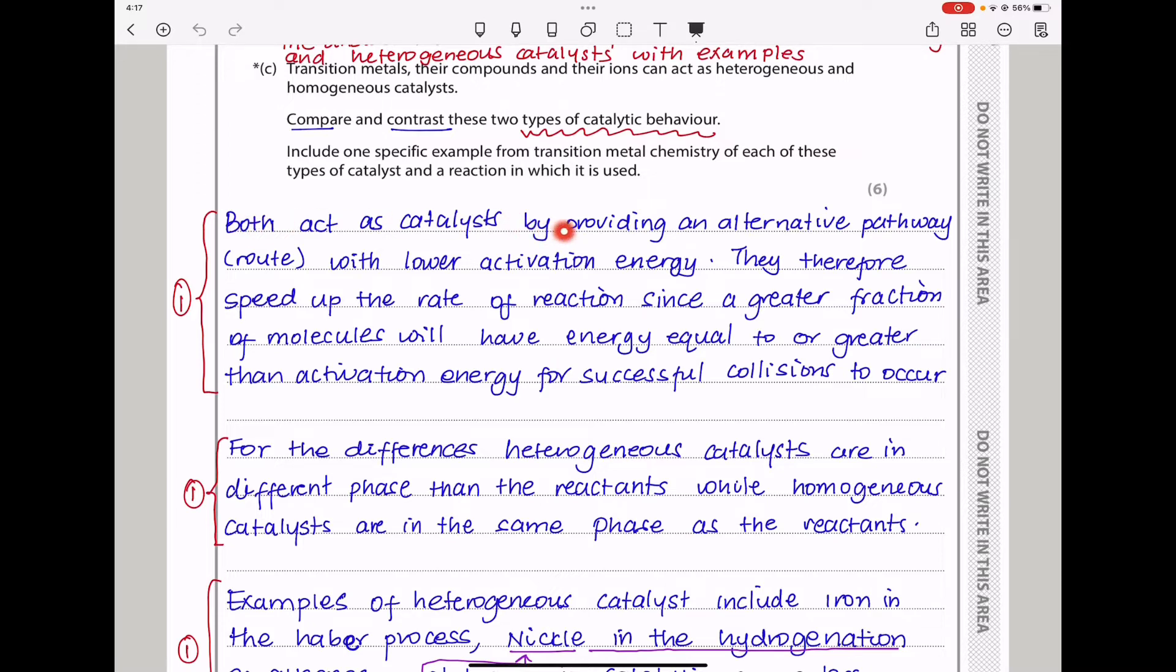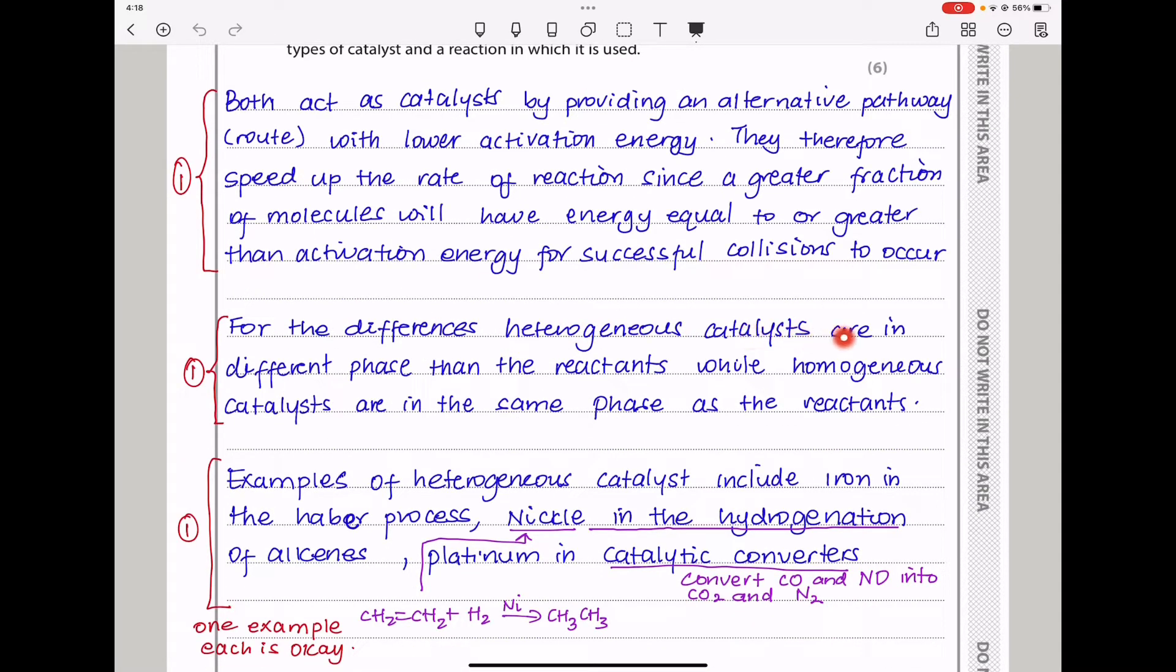Both act as catalysts by providing an alternative pathway with lower activation energy and therefore the speed of the rate of a reaction since a greater fraction of molecules will have energy equal to or greater than the activation energy for successful collisions to occur. For the differences, heterogeneous catalysts are in different phase than the reactants while homogeneous catalysts are in the same phase as the reactants. This point earns you your second mark.